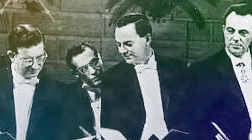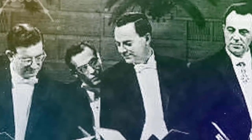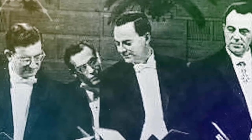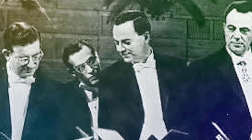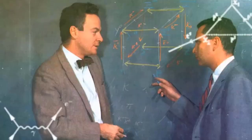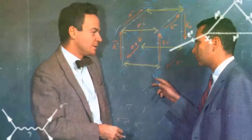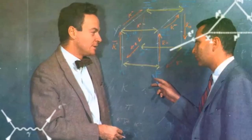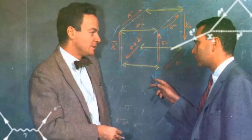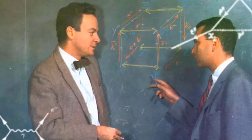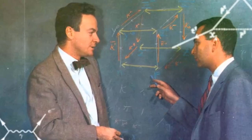Feynman had an idea: he would create a computer made from the same tiny particles he was trying to understand. This new kind of computer would be able to solve problems that were impossible for regular computers. Feynman's idea led to the development of quantum computers.